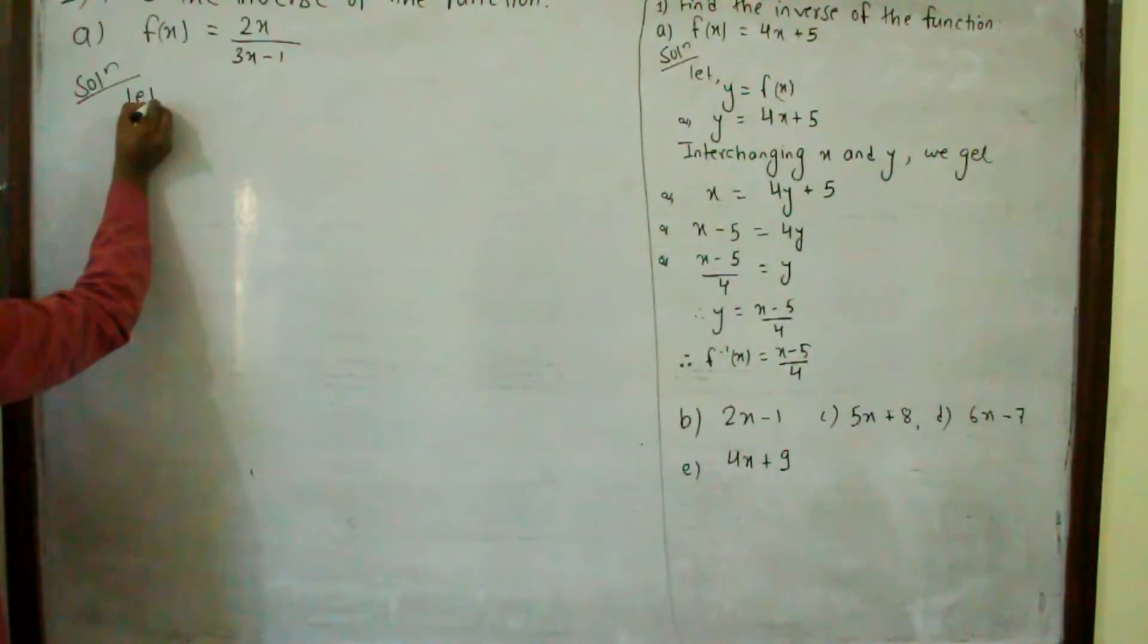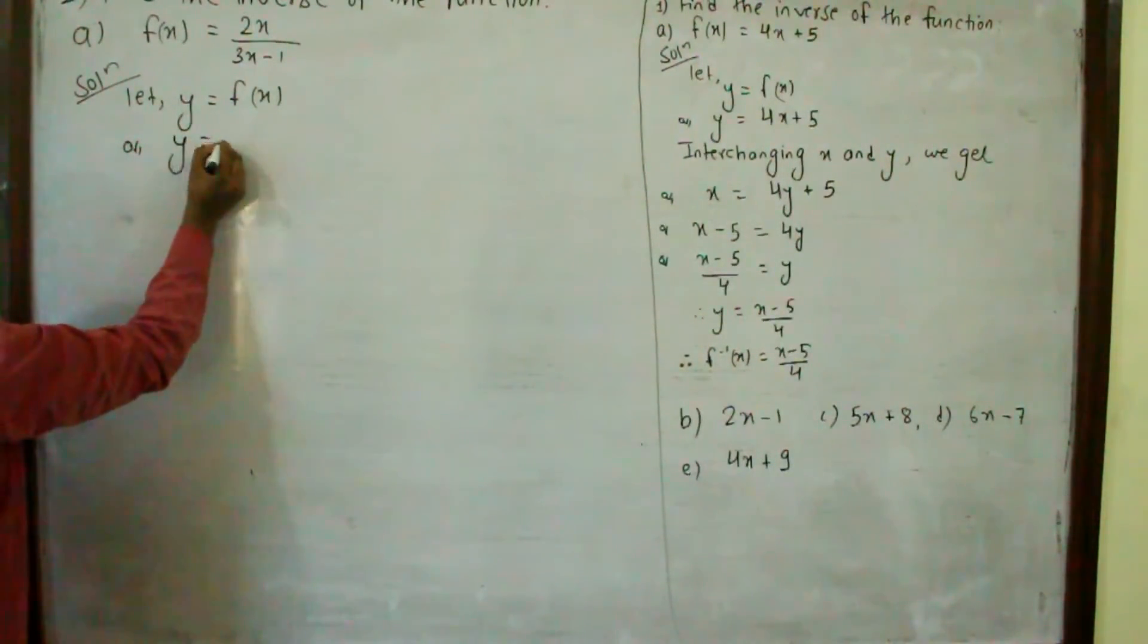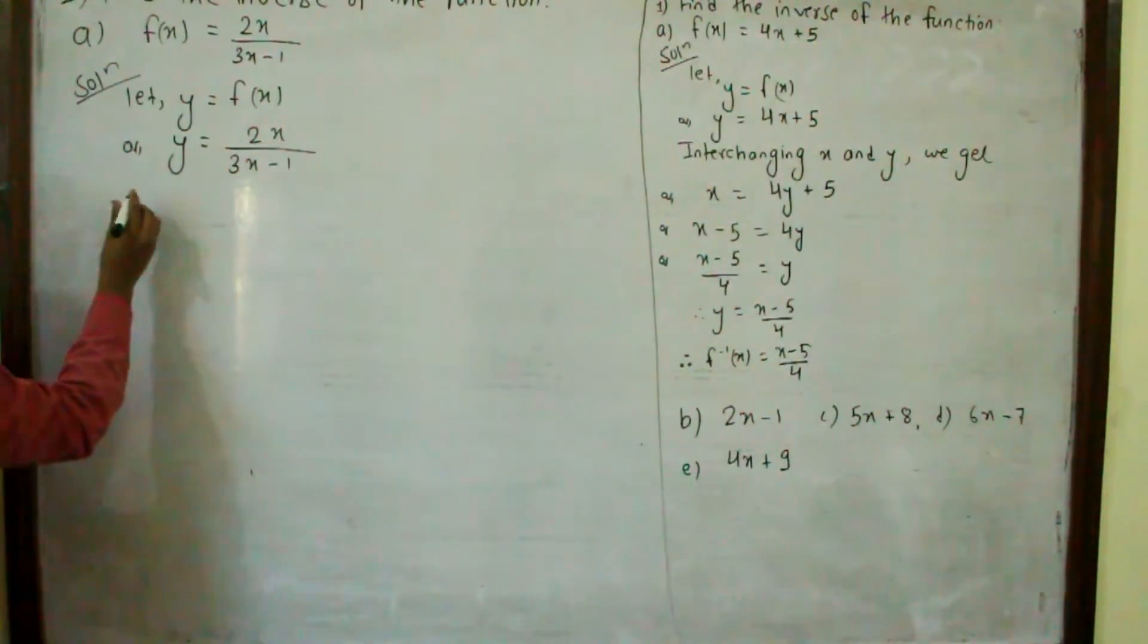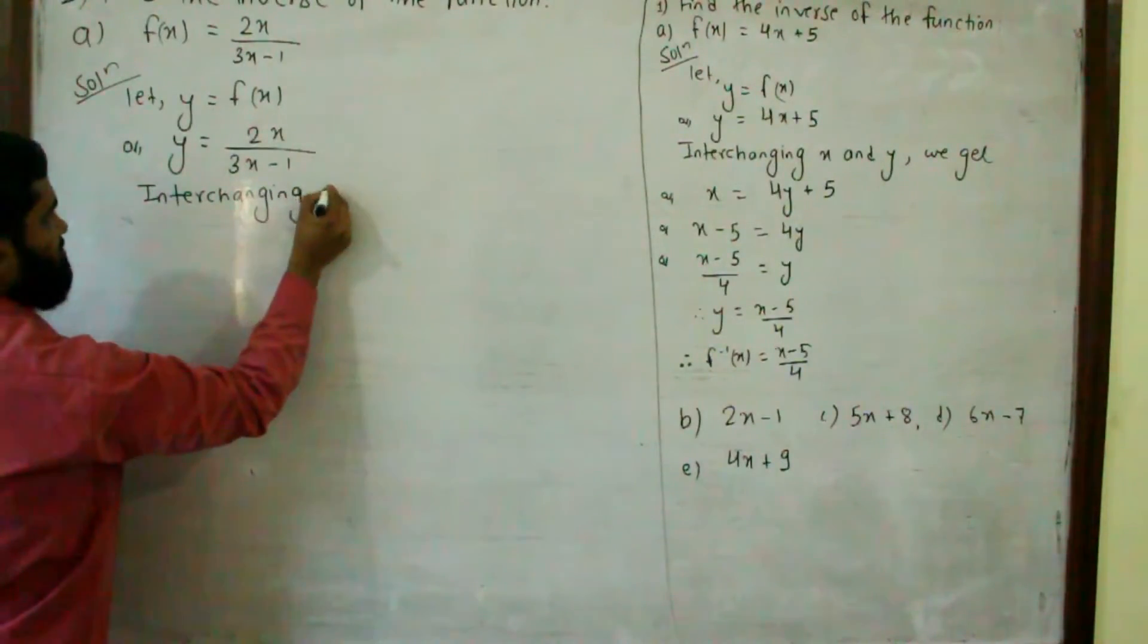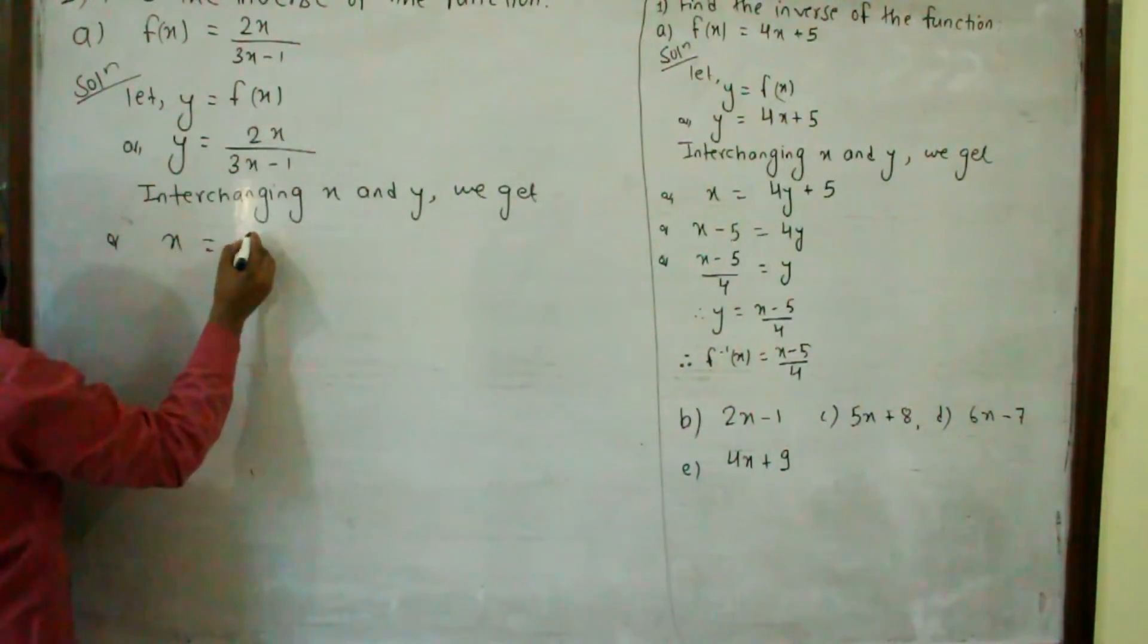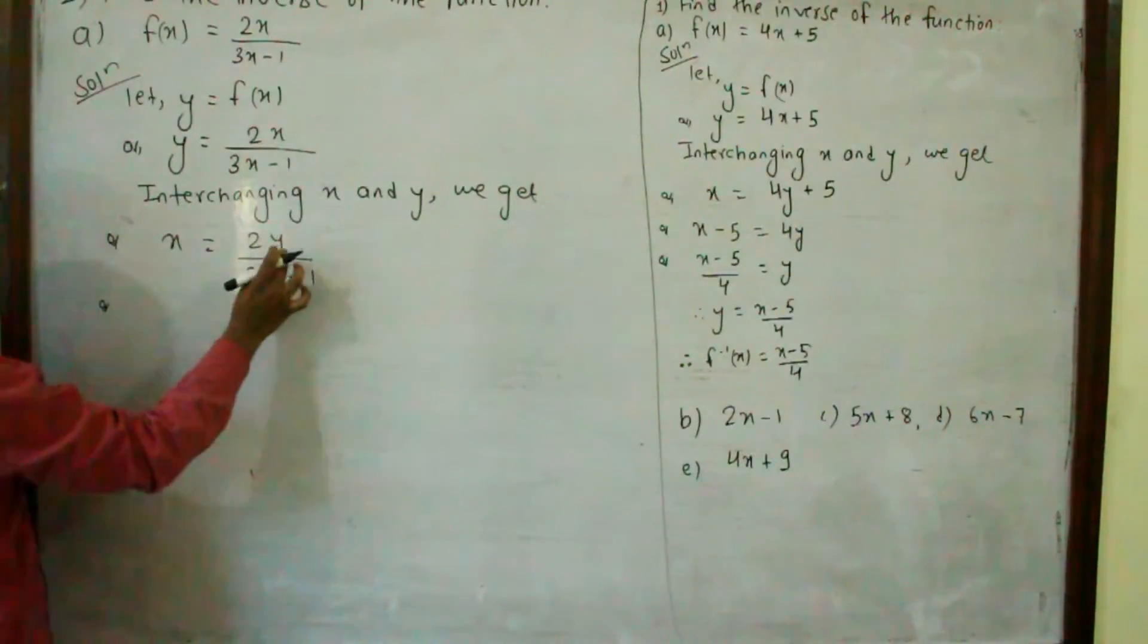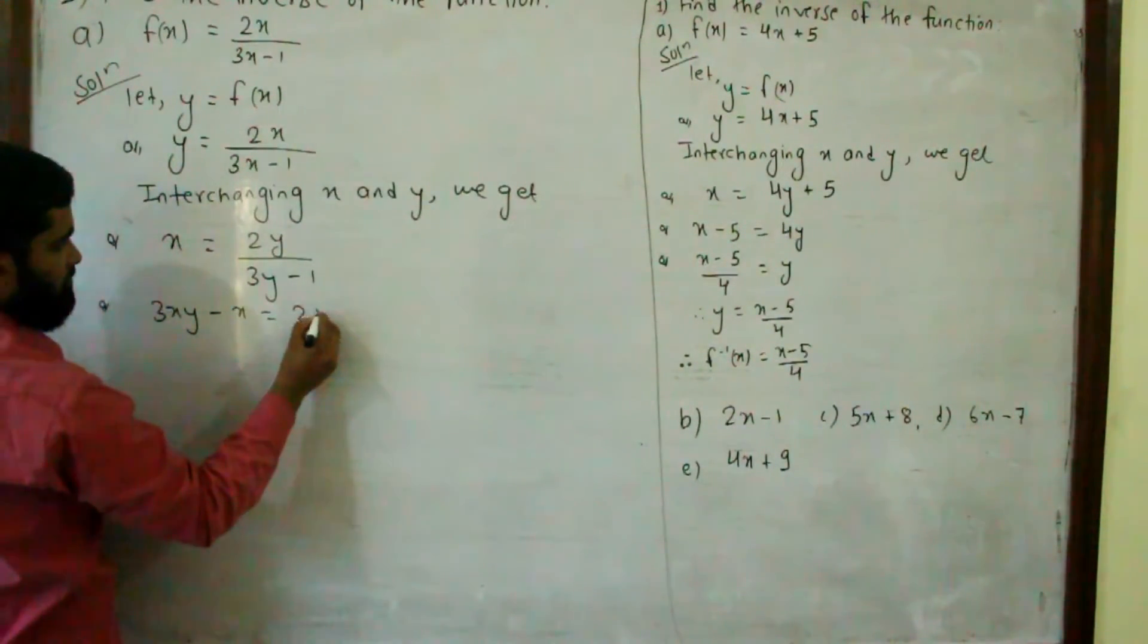Let y equal to f(x), so y equals 2x upon 3x minus 1. Interchanging x and y, we get x equals 2y upon 3y minus 1. Now we need to find the value of y. Cross multiply: 3xy minus x equals 2y.